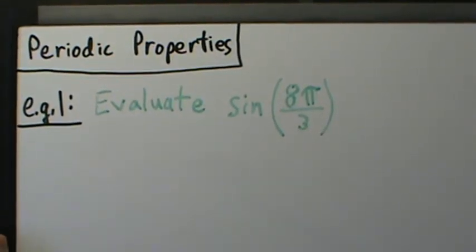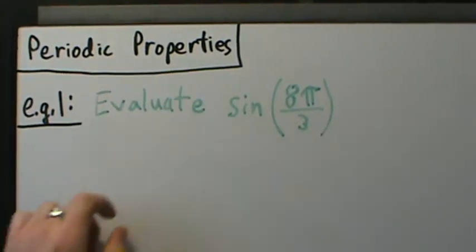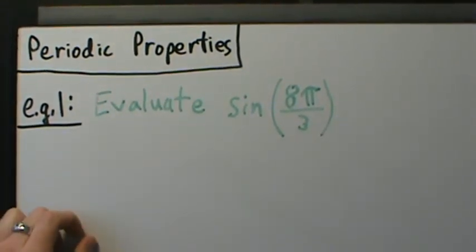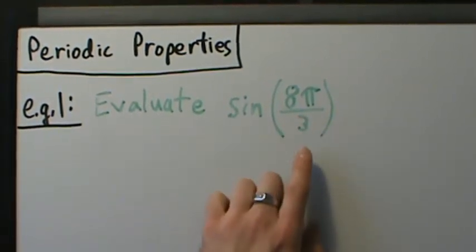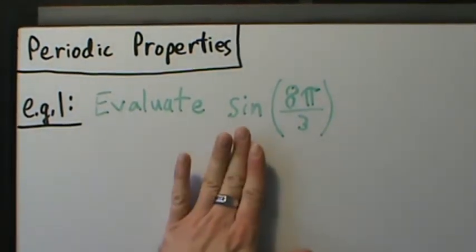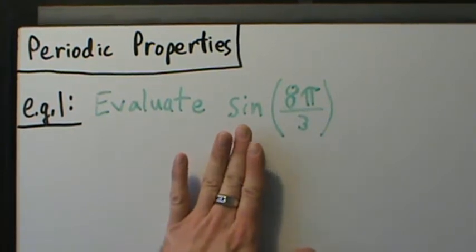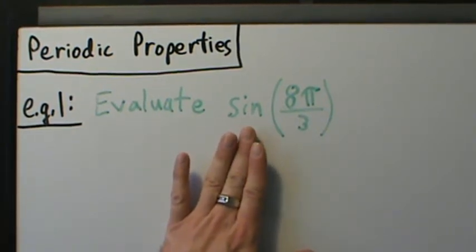Here's example one with using the periodic properties to evaluate a trig function. Evaluate sine of 8π over 3. Sine, remember — we talked about it in a previous video — the sine function has period 2π.